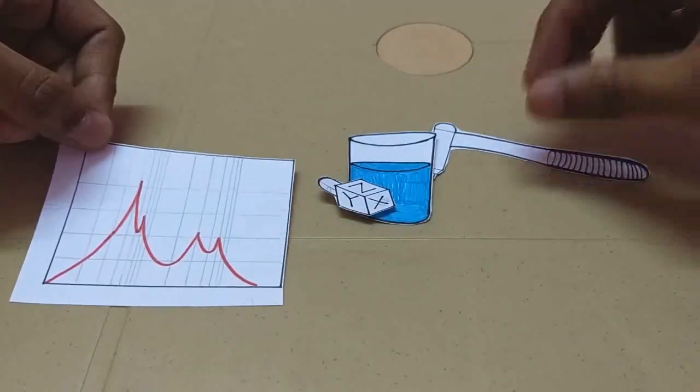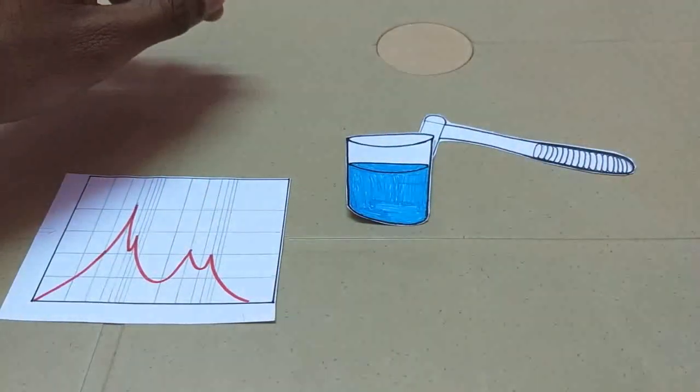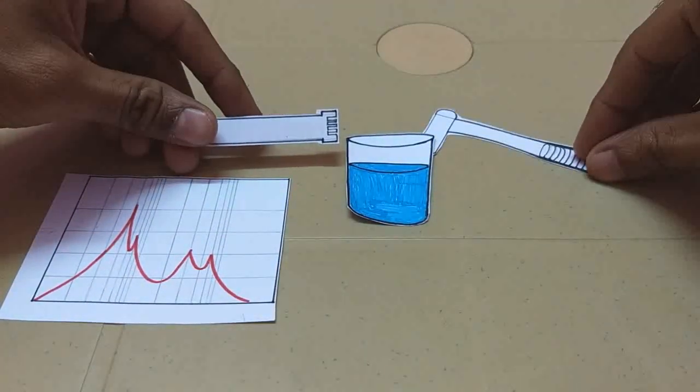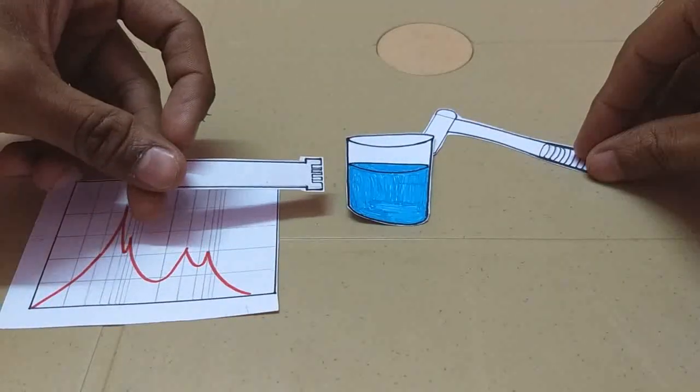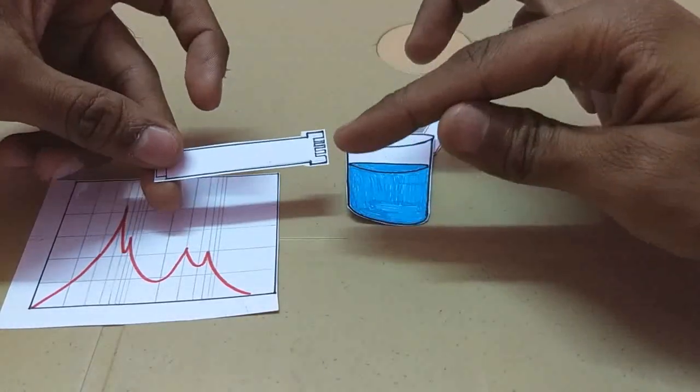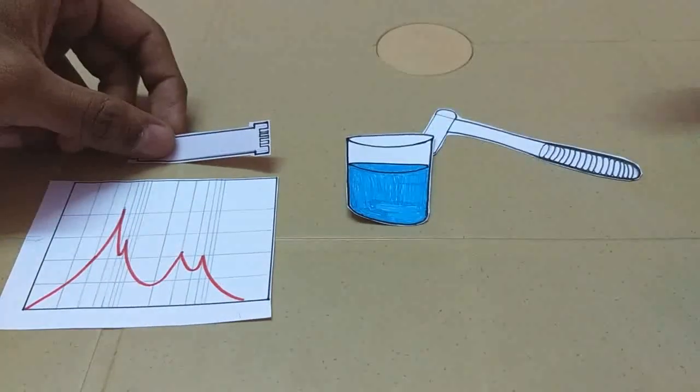This is the first method. The second method is you replace the accelerometer with a microphone. So what you'll do is you will again impact the beaker. Well, in this scenario, now you'll capture the sound emitted by the beaker. So you'll capture it using a microphone and then process and then get the frequency spectrum and thus you'll obtain the natural frequency.